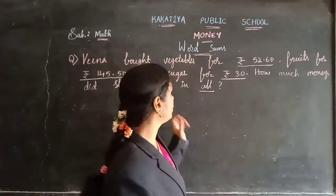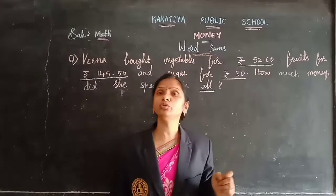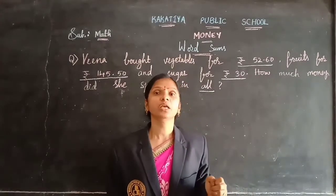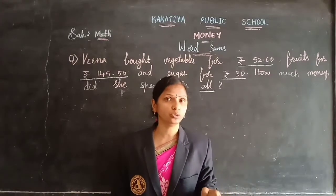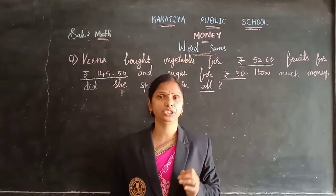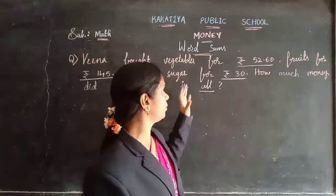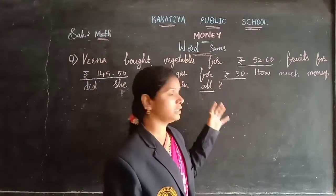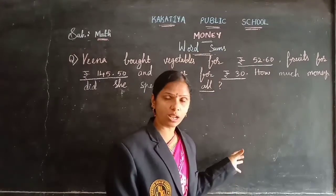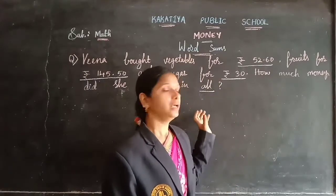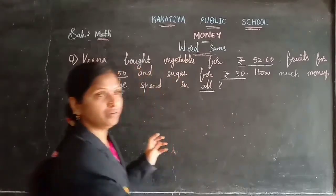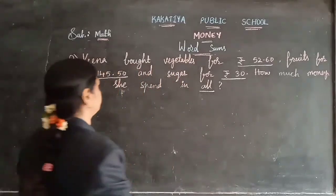Total amount means what you need to do, children — you need to do the addition. Let's erase that, arrange the given numbers into columns, write the steps, and then do the addition.